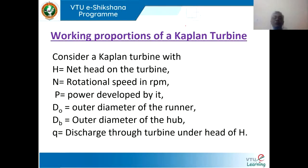The working proportions of the Kaplan turbine are very similar to those of the Francis turbine. If H is the net head on the turbine — net head is the gross head minus friction loss in the penstock — N is the rotational speed of the turbine in RPM, and P is the power developed, that is the shaft power.